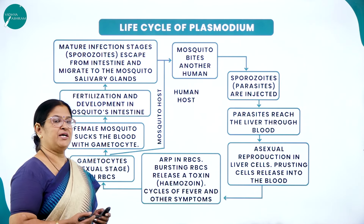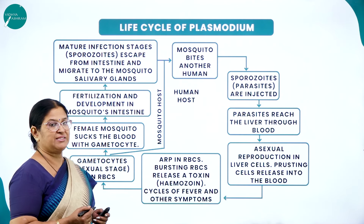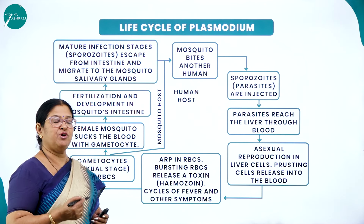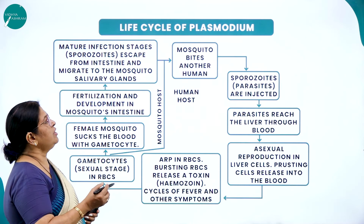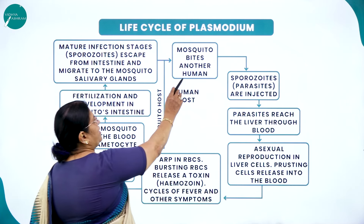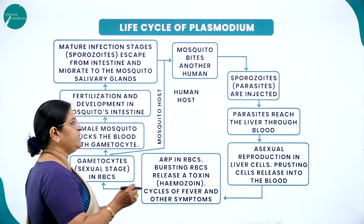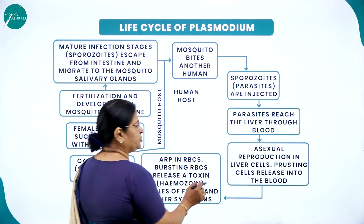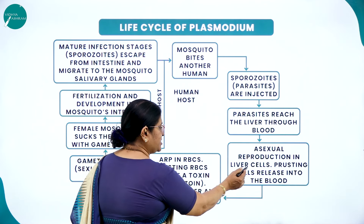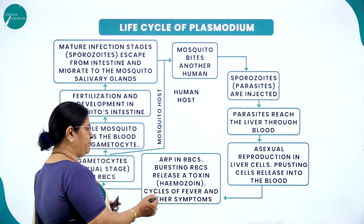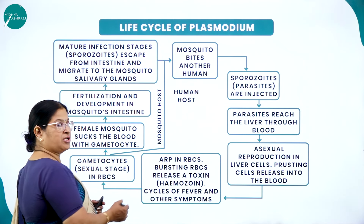Moving on to the life cycle of Plasmodium — this is a very important question which will be asked in the board examination. Plasmodium is the causative agent for malaria. In the life cycle, a mosquito bites a human and injects sporozoites, which is the infective stage. The parasites reach the liver through blood and multiply through asexual reproduction, accumulating in liver cells.